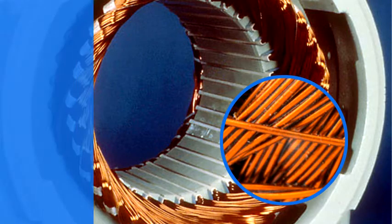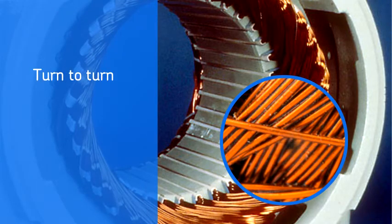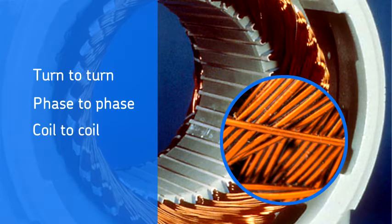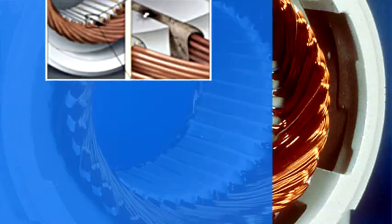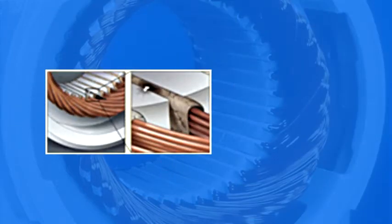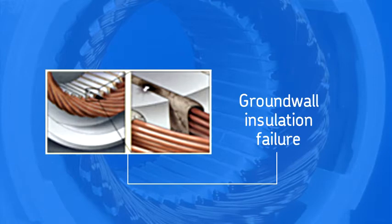This is called a turn-to-turn fault. Other wire-to-wire insulation faults are phase-to-phase and coil-to-coil. When the insulation fails and there is a path to the core, it is called a ground wall insulation failure.